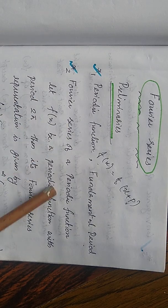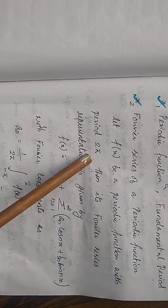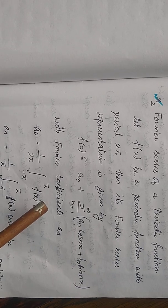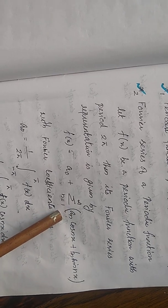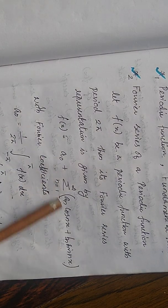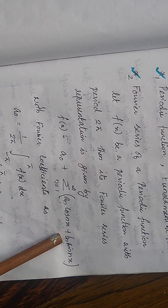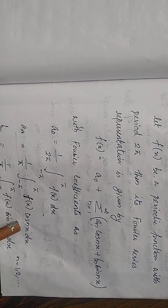The next thing is the Fourier series of a periodic function. Suppose f(x) is given to be a periodic function with period 2π, then its Fourier series expansion is f(x) = a0 plus sigma n=1 to infinity of (an cos nx + bn sin nx). Here a0, a1, an, and bn are called the Fourier coefficients, given by Euler's formula: a0 = (1/2π) integral from −π to π of f(x) dx, and an = (1/π) integral from −π to π of f(x) cos nx dx.